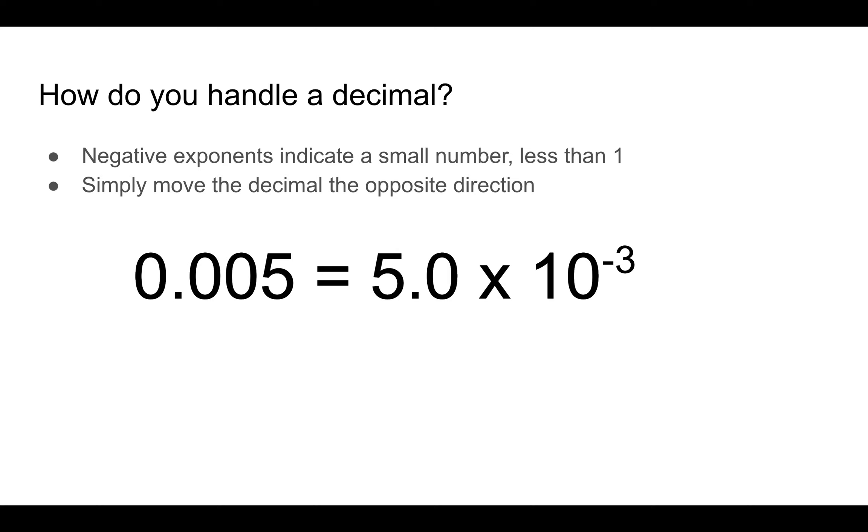And you basically just do the opposite of what you did for the positive exponents. So it's just a clue to remember that it's a very small number. And you basically just move the decimal the opposite way.